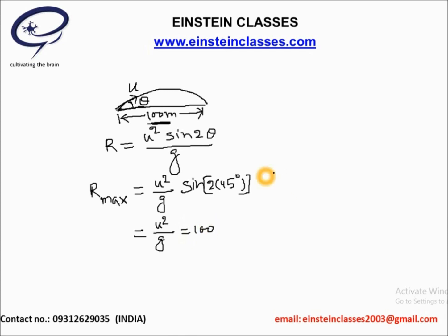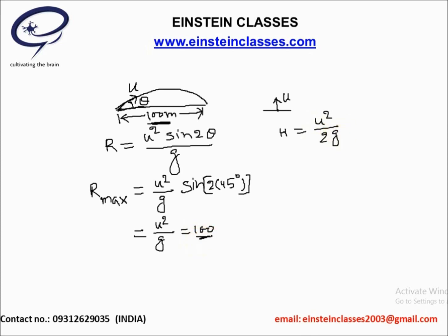Now the problem asks: what is the maximum height above the ground that the cricketer can throw the same ball, when throwing it vertically upward with speed u? In this situation, the height h = u²/2g. Since u²/g = 100, therefore u²/2g = 100/2 = 50 meters.